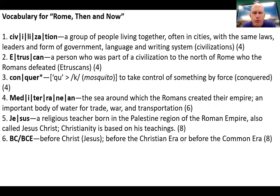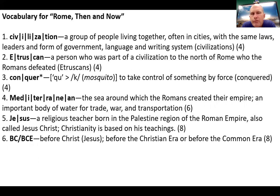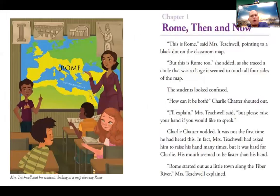Here are some vocabulary words to look over, broken up by syllable to help you remember them: civilization, Etruscan, conquer, Mediterranean, Jesus, BC, and BCE. Keep track of your vocabulary. All right, Chapter 1. Let's look at this — it's going to be located on pages two and three.